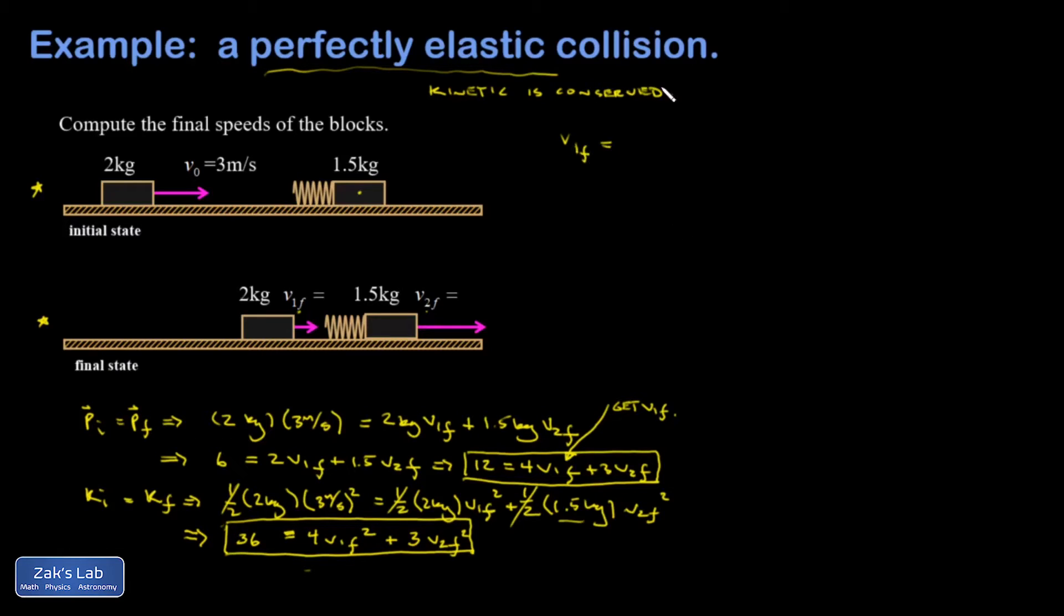So here's what I'm going to do: I'm going to solve for v1f in my linear equation, and that would be 12 minus 3v2f all divided by 4. And then I'm going to pop that into the bottom equation, so I have 36 equals 4 times v1f squared, so I've got to square this thing.